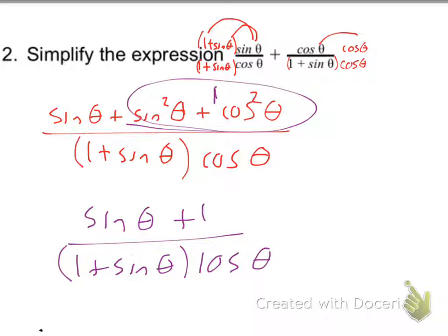Cancel what? Sine theta plus one. Oh, is that the same thing as one plus sine theta? So this group and that group down below does cancel, leaving you with one over the cosine theta, which equals secant theta. Wait a minute, didn't the last problem also equal secant theta? Oh my gosh, there's so many different ways to write secant theta.